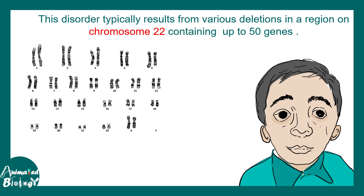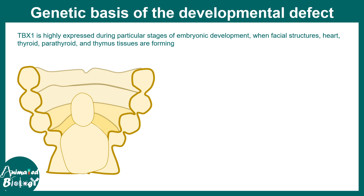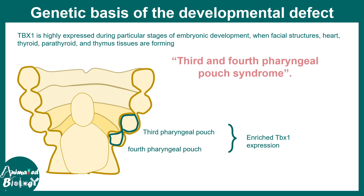DiGeorge syndrome is associated with a micro-deletion that roughly contains about 50 genes. One such gene at this location is the TBX1 gene. The TBX1 gene product is really important in specific stages of embryonic development when the facial features, heart, thyroid, and parathyroid glands are developing. The third and fourth pharyngeal pouches are highly enriched in TBX1 expression, and in DiGeorge syndrome there is a defect in third and fourth pharyngeal pouch formation.